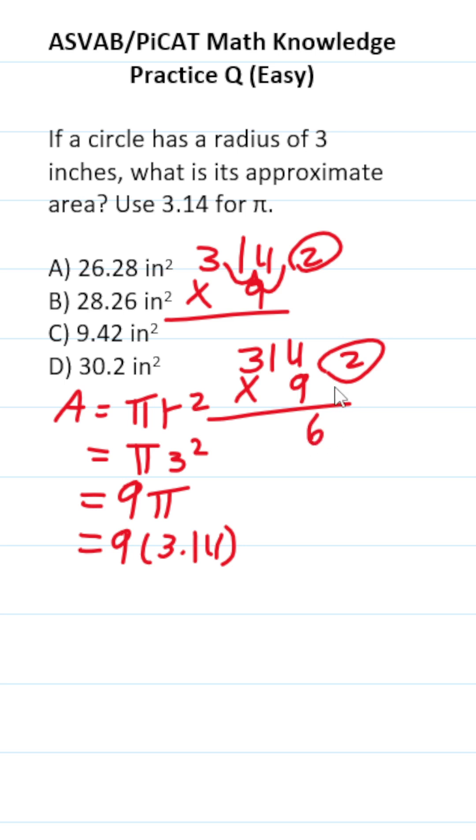9 times 4 is 36. Bring down a 6, carry a 3. 9 times 1 is 9, 10, 11, 12. Bring down a 2, carry a 1. 9 times 3 is 27, plus 1 is 28.